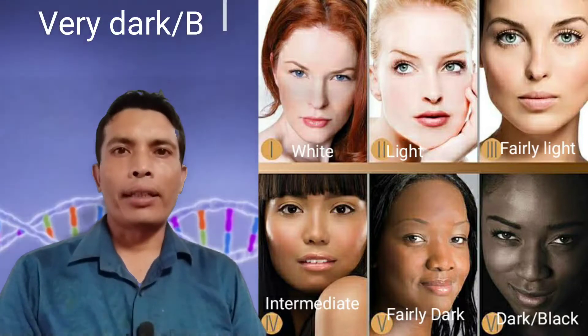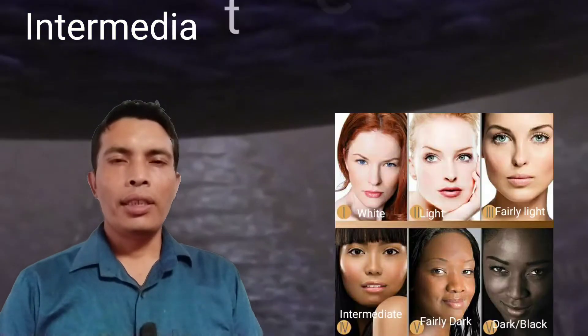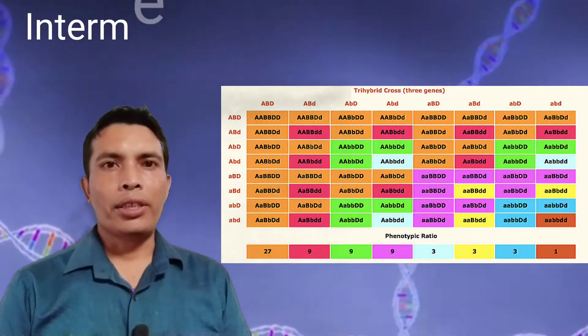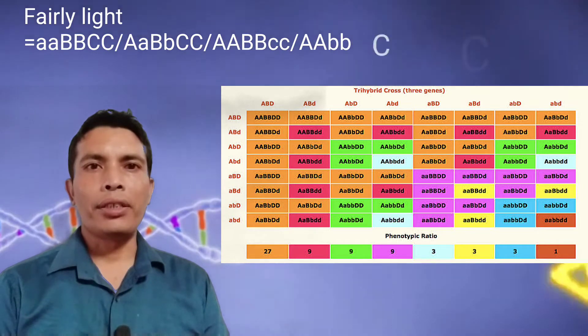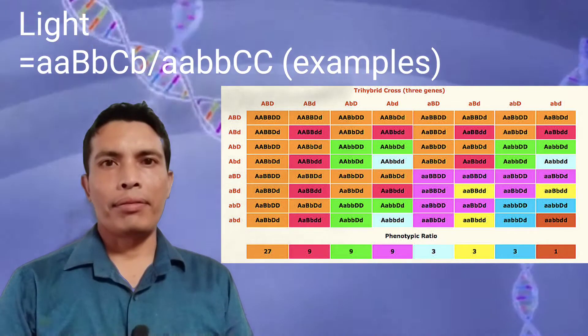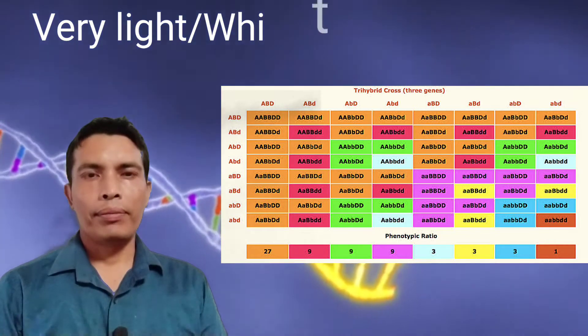Very dark or black has the genotype with all dominant alleles: AABBCC. Fairly dark has one recessive pair. Intermediate has three dominant and three recessive letters in the genotype. Fairly light has two small letters in the genotype. Light has four small letters in the genotype. The last one, very light or white, has all six alleles as small letters.